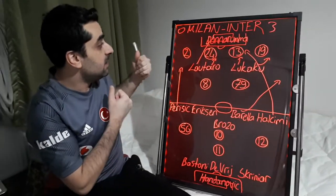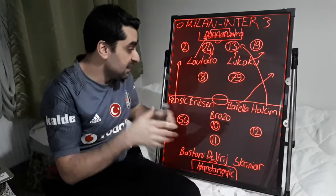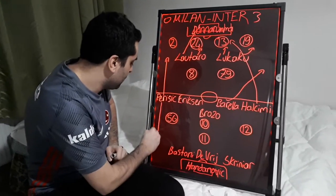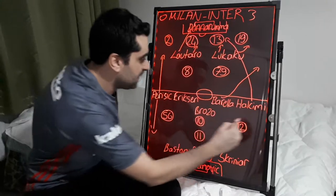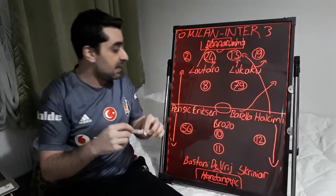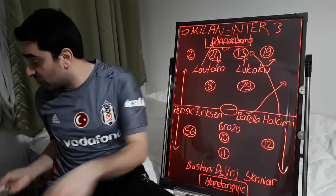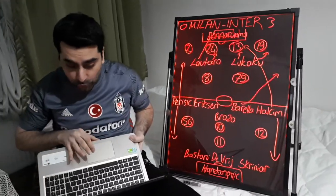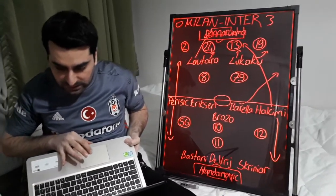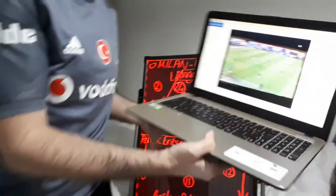In Milan attacks, every time Inter's defense line turned into 5. Perisic came close to left back, and Hakimi came close to right back. Inter played in a 5-3-2 formation.